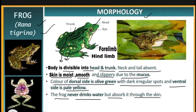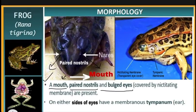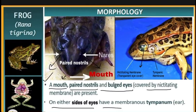The frog has a mouth, paired nostrils, and bulging eyes which are covered by a nictitating membrane that protects the eye from water. On either side of the eyes is a membranous tympanum — the frog has no external ear; the ear starts directly from the tympanum.